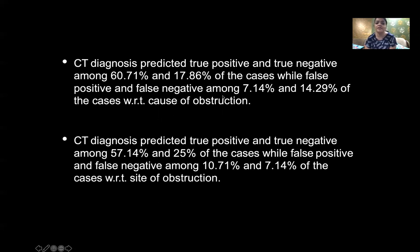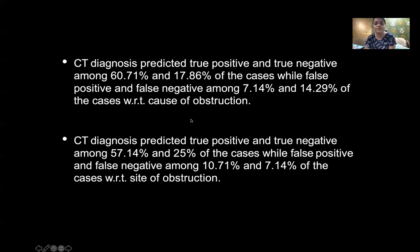CT diagnosis predicted true positive and true negative among 60.71% and 17.86% of cases, while false positive and false negative among 7.14% and 14.29% of cases with respect to cause of obstruction. CT diagnosis predicted true positive and true negative among 57.14% and 25% of cases, while false positive and false negative among 10.71% and 7.14% of cases with respect to site of obstruction.